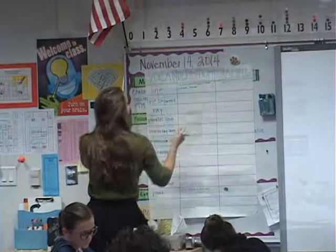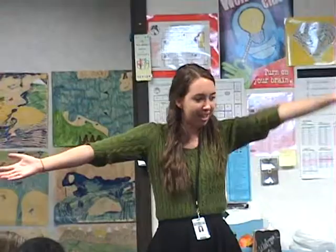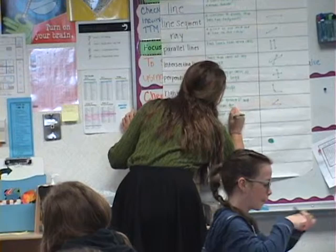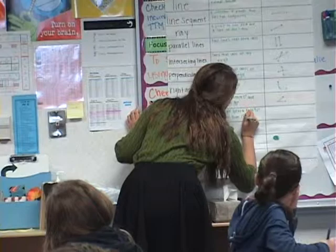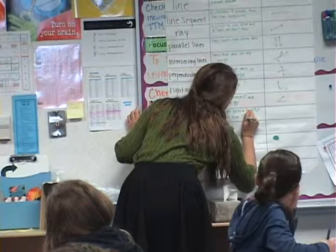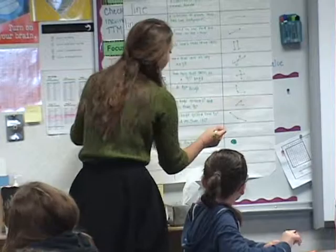Our obtuse angle is the complete opposite of acute. It is anything greater than 90 degrees and less than 180 degrees. So if this is our right angle, our obtuse angle is all the way this way — somewhere in this area. Let's define that: any angle greater than 90 degrees and less than 180 degrees. When you're drawing your angle, you can do any size you want as long as it's not a flat line and it's not a right angle.